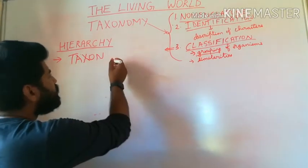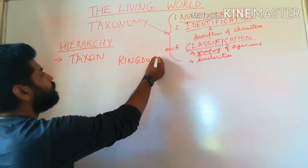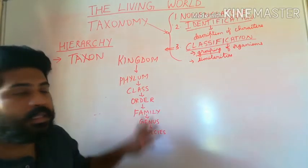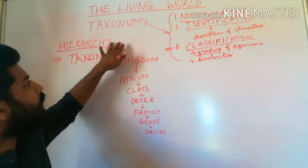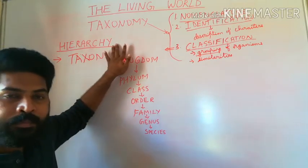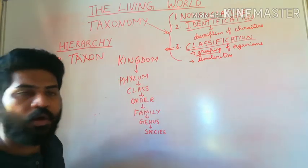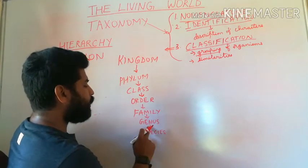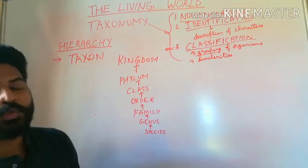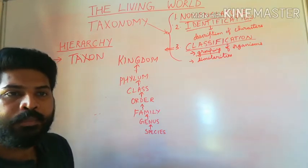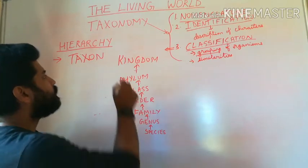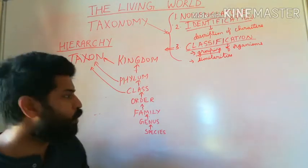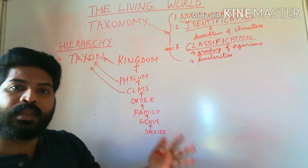These seven steps or categories are called the hierarchy of classification. It starts with Kingdom at the top. These are the seven levels in the hierarchy of classification. Hierarchy means it is in an increasing or decreasing order — here it is in a decreasing order from kingdom downward. In increasing order we start with species and proceed upwards. When an organism is discovered it can be placed into this hierarchical system, and each step is called a taxon.